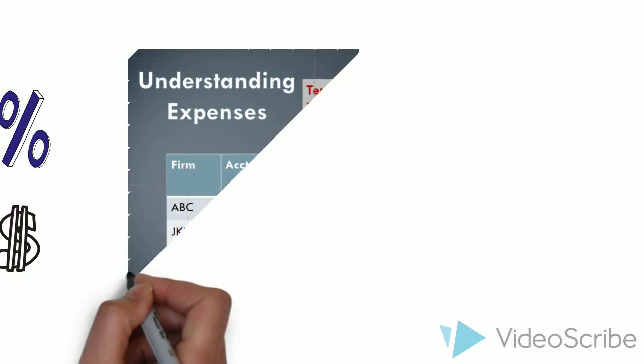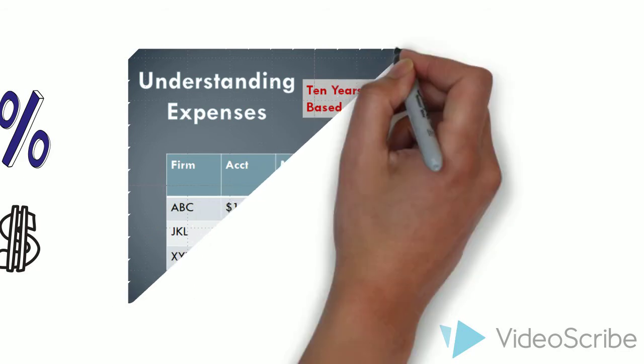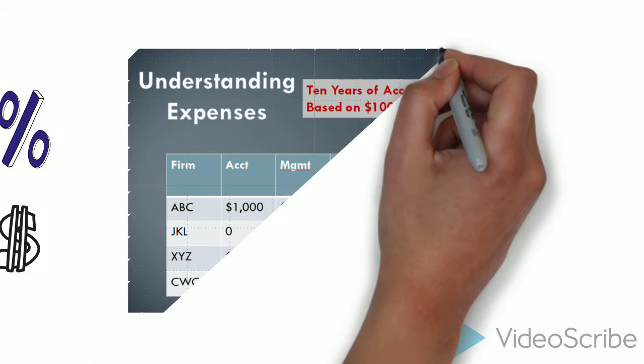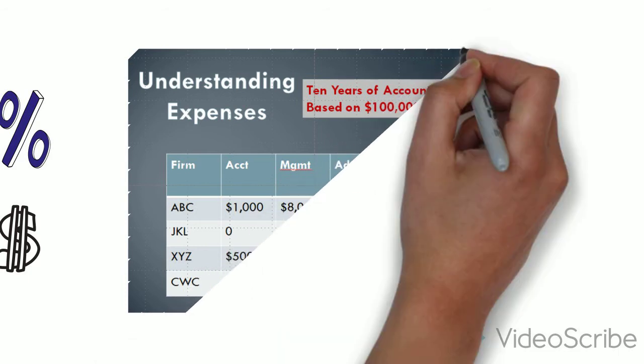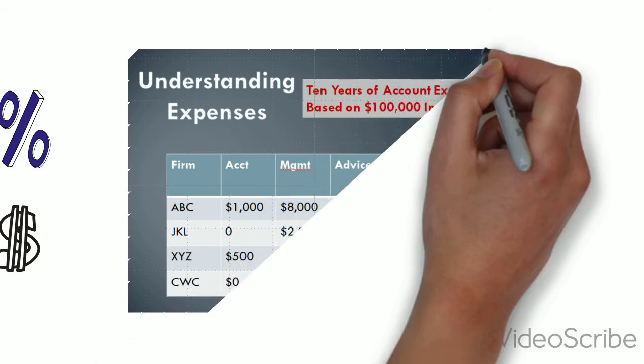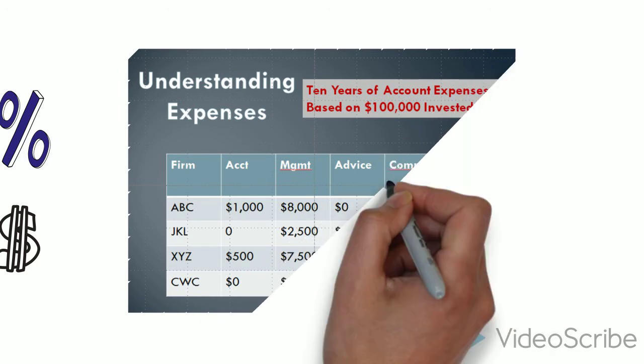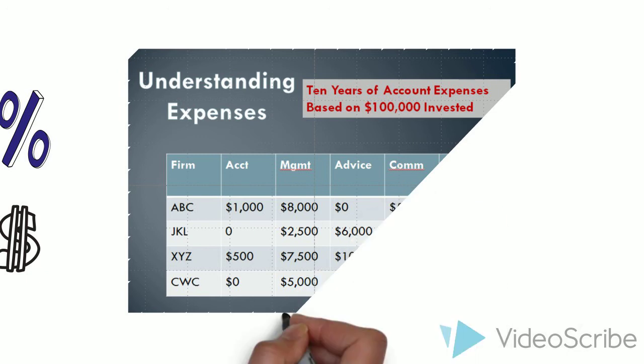Put a table graphic together with six columns. The first column is the firm name, and then the next five are headed by the fees I just mentioned: account fees, management fees, advisory fees, commission sales charges, and then have a total.